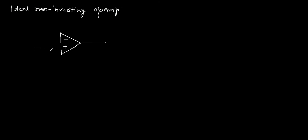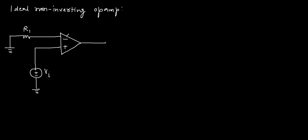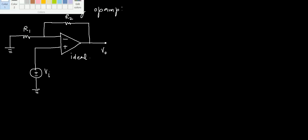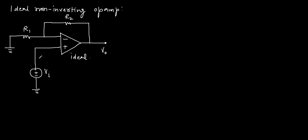Ideal non-inverting op-amp. For this circuit, we have an op-amp. Since this is a non-inverting op-amp, the input is applied at the non-inverting terminal. The input is Vi and resistance R1 is connected to the inverting terminal, with this end grounded. The feedback resistance R2 is connected between the output and inverting terminal, providing negative feedback to make the closed-loop voltage gain of this op-amp finite. This op-amp is ideal and we have to find out the closed-loop voltage gain.